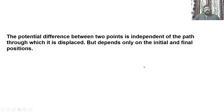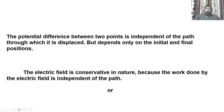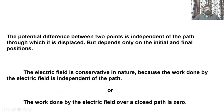The potential difference between two points is independent of the path through which the charge is displaced; it depends only on the initial and final positions of the charge. That means the potential difference depends only on the positions of the two points, not on the path taken. That is why we say the electric field is conservative in nature — the work done by the electric field is independent of path, and the work done over a closed path is zero.